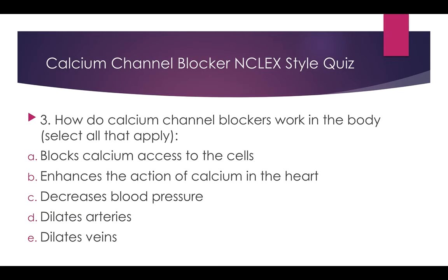Number three: how do calcium channel blockers work in the body? Select all that apply. A. Blocks calcium access to the cells. B. Enhances the action of calcium in the heart. C. Decreases blood pressure. D. Dilates arteries. E. Dilates veins.